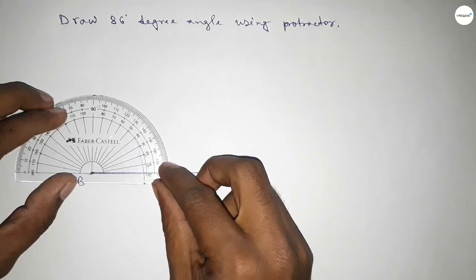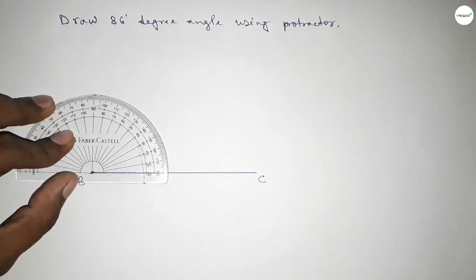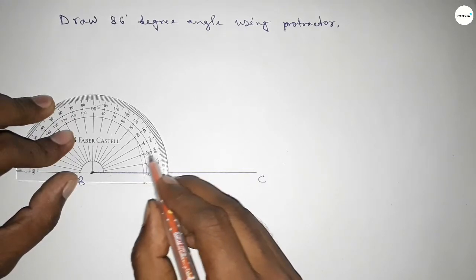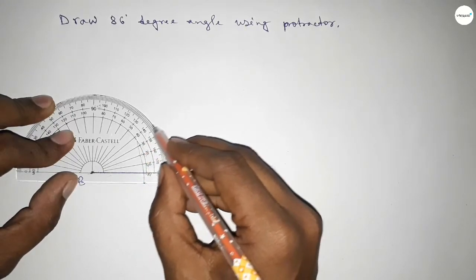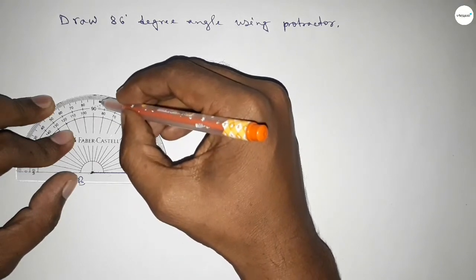Place it perfectly, then count the angles. So this is starting: 0, 10, 20, 30, 40, 50, 60, 70, 80...